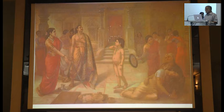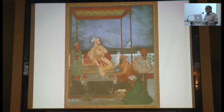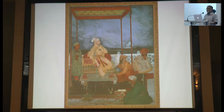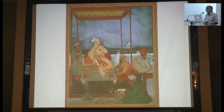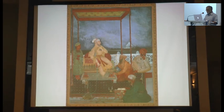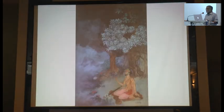Abanindranath himself was trained in such a manner, but somewhere around 1896 he gave up this idea and thought that Indians should paint in a manner that is more Indian. He looked towards Mughal miniatures as the source for his style, and also looked at Mughal history and Sanskrit literature as the source of his subject matter. There is an illustration to Kalidasa as an example of this kind of work.